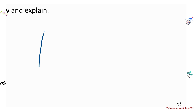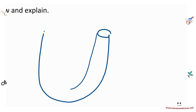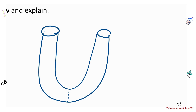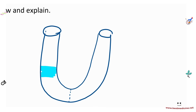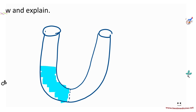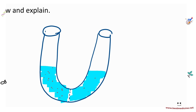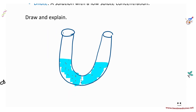To display osmosis, imagine a test tube with a semi-permeable membrane dividing it. On the left side you have water with some solute, and on the right side you also have water with a little bit of solute. The left side is more concentrated — that's hypertonic — while the right side is hypotonic, meaning less concentration.